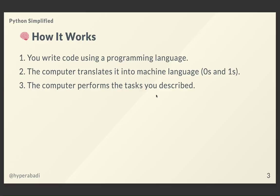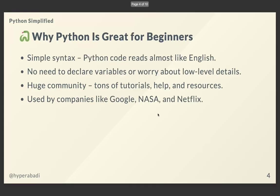Ever wonder how does it work? You write code using a programming language, also known as a high-level language. The computer translates it into machine language — zeros and ones, also known as binary language. Then the computer performs the task you described. Alright, why is Python great for beginners? It has a simple syntax — Python code reads almost like English.